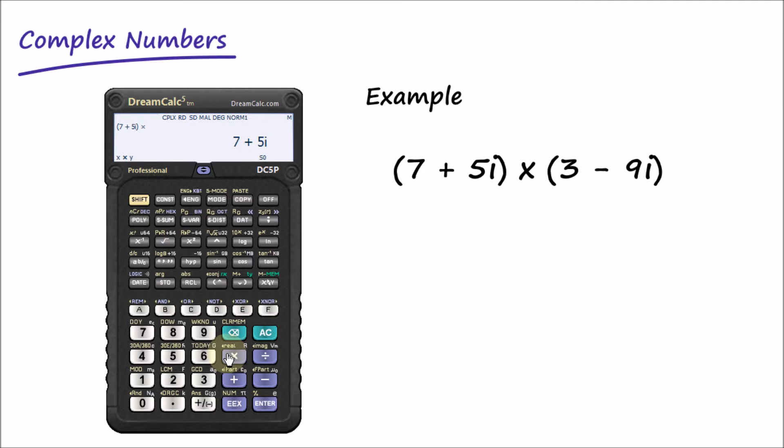Now with the second number we'll need to use the sign key or soft minus with its negative imaginary part. 3 separator minus 9 equals 66 minus 48i. So let's grab the result and copy it into our presentation. Copy.